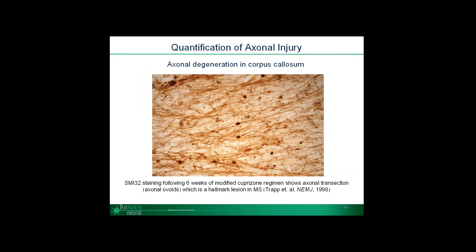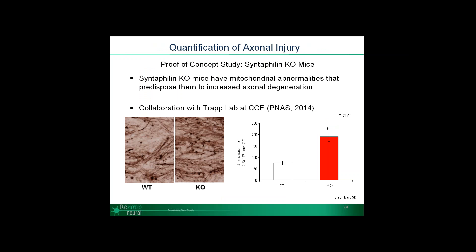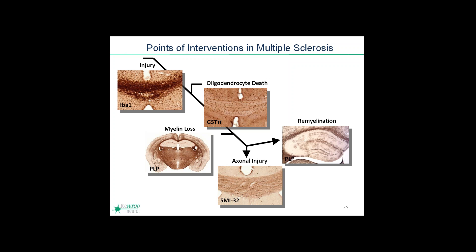We can create automated analysis to quantify individual cells, and in this case study we asked whether axonal ovoids could be quantified. We determined that axonal injury in terms of axonal transections can be quantified, as seen in a proof-of-concept study conducted in collaboration with the TRAP Lab at the Cleveland Clinic. In this study, we used a snapin knockout animal known to have mitochondrial abnormalities that predispose them to axonal degeneration. We showed that axonal ovoids are quantifiable and that the differences between the knockout and the control can be significant.